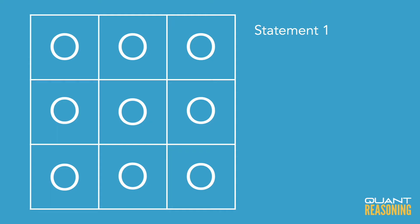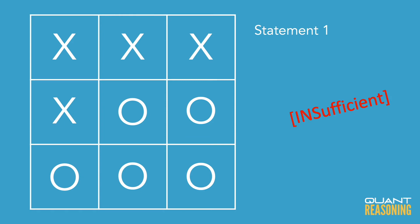Statement one tells us that more than half of the squares are O's, which means that fewer than half of the squares are X's. So at most we could have four X's. How many X's are there? It could be zero, one, two, three, or four. I don't know which of those, so statement one is not sufficient on its own.